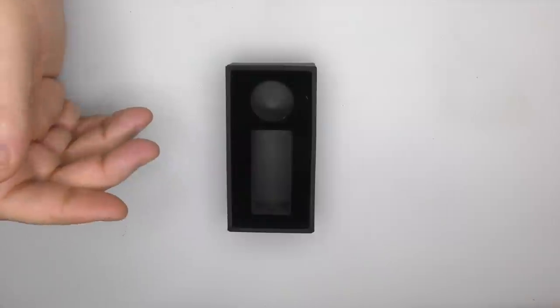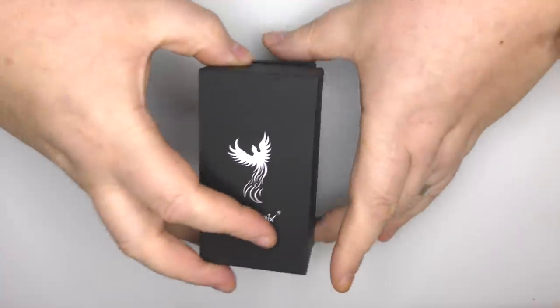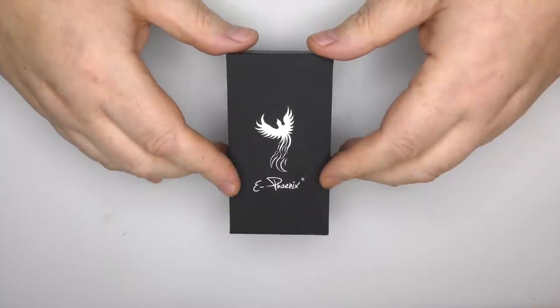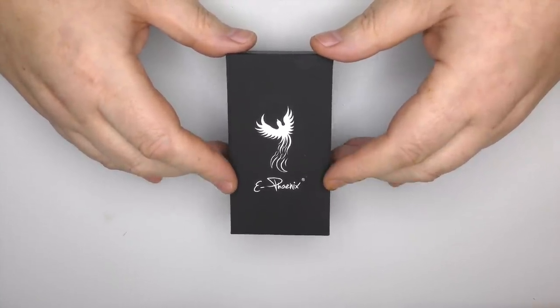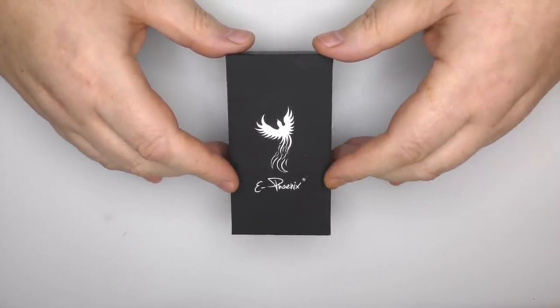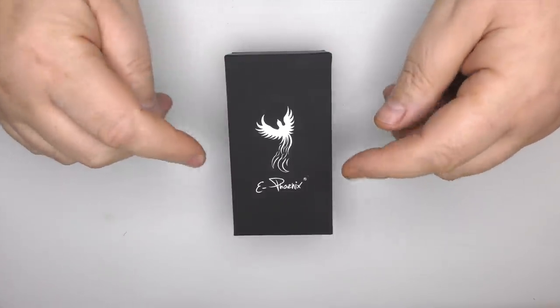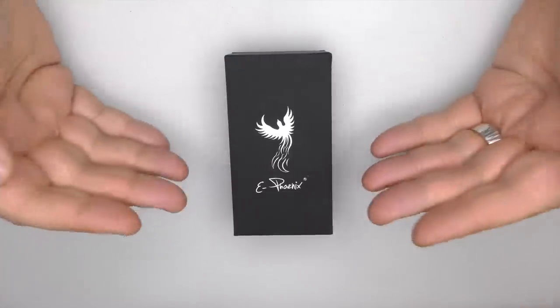There's no manual or anything like that, and price wise on this one you will be going along to their website, the ePhoenix website. Just google it and you'll find it. And it's about 130 Swiss francs, and that works out about £105. Obviously, you'll have shipping fees on top of that.